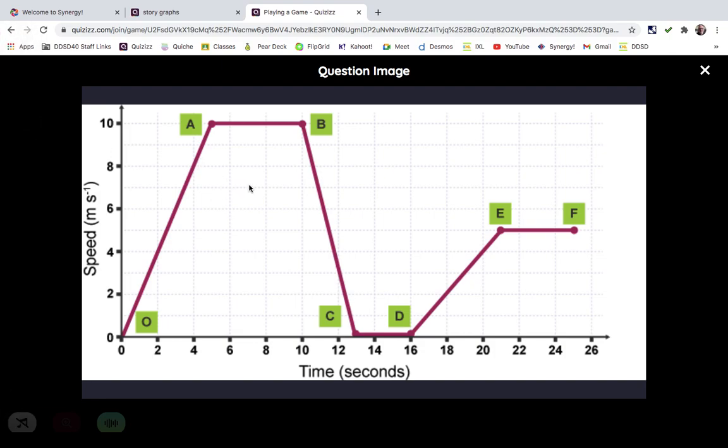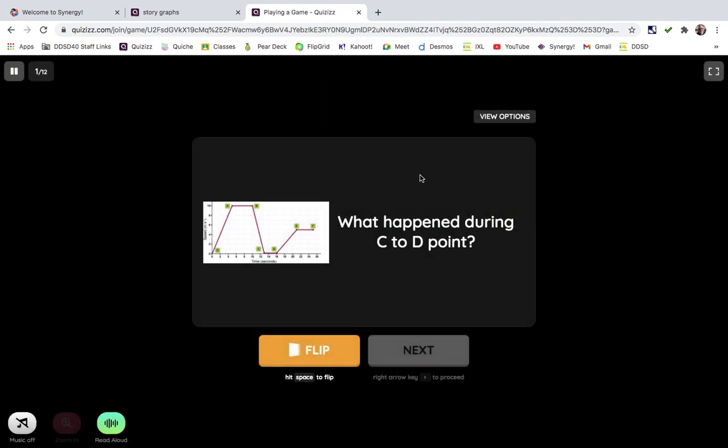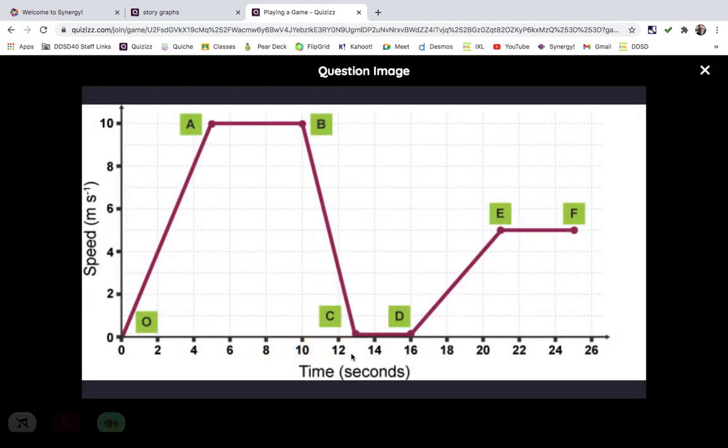The question on this one is what happened during C to D, from C to D. So if we look over here on the left side, we see the speed in meters per second.